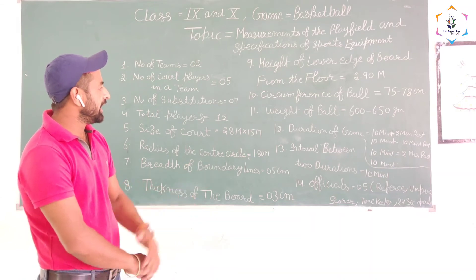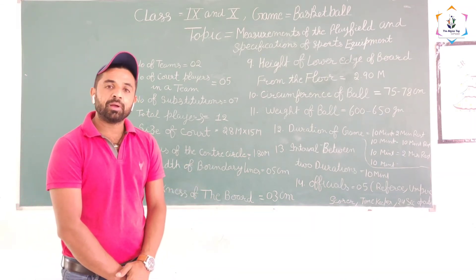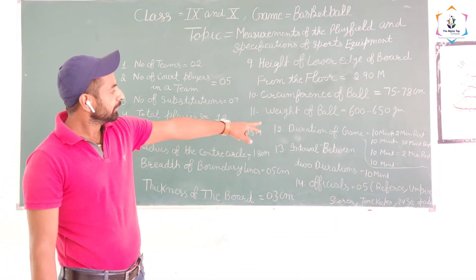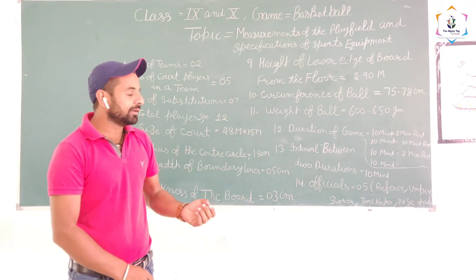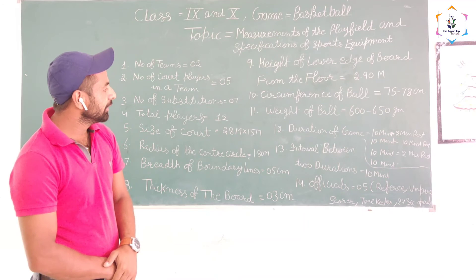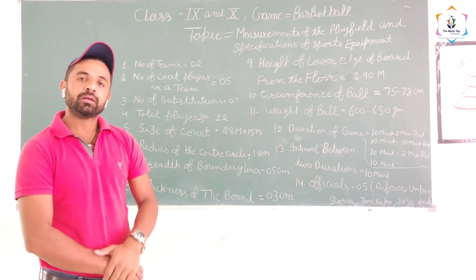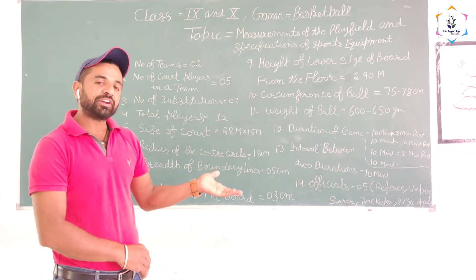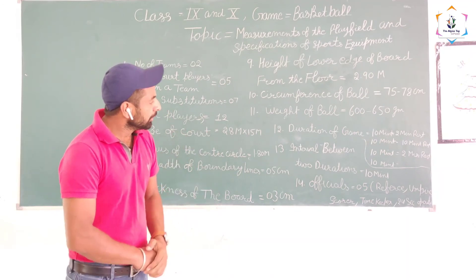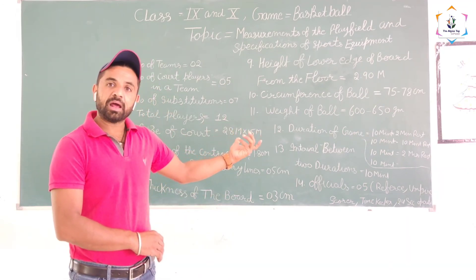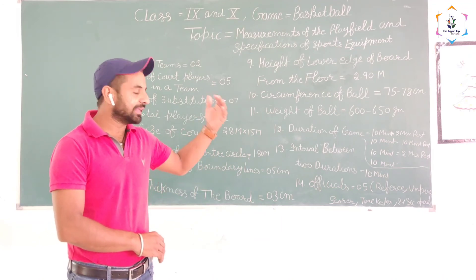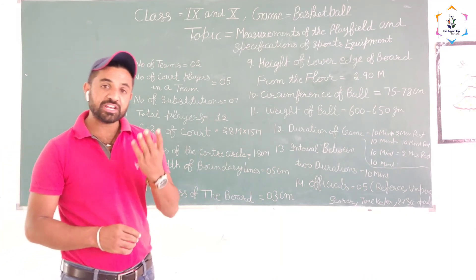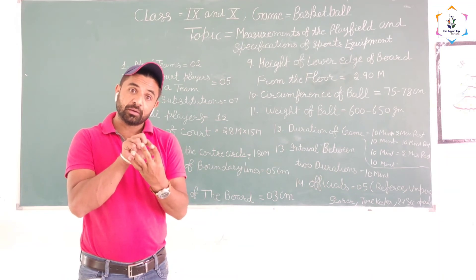What is the duration of the game? In the main game, we have 4 quarters of 10 minutes each. After the first quarter there is a 2-minute rest, then the second quarter of 10 minutes. After that there is an interval time, then 10 minutes for the third quarter, and after 2 minutes the fourth quarter is played.